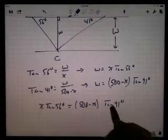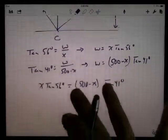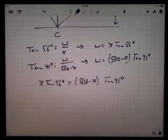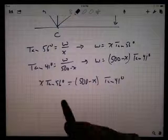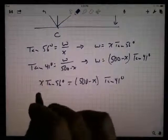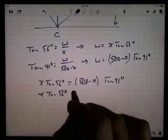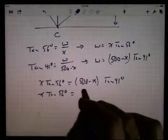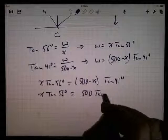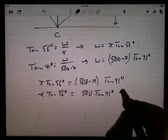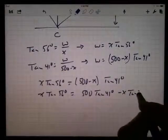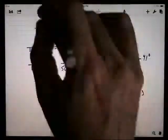So I'll do that by distributing here. I'm going to not do any calculations until the end. That's when I'll type it in my calculator. I don't want to round anything here if I can avoid it. So X tan 56 degrees is equal to the distributive property here. 500 times the tangent of 41 degrees minus X times the tangent of 41 degrees.